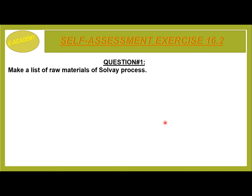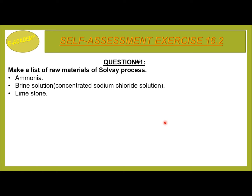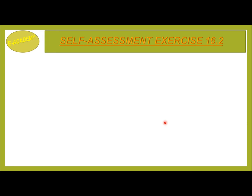Self-Assessment Exercise 16.2, Question No. 1: Make a list of raw materials of the Solvay process. Ammonia, brine solution, concentrated sodium chloride solution, and limestone are the raw materials of the Solvay process.